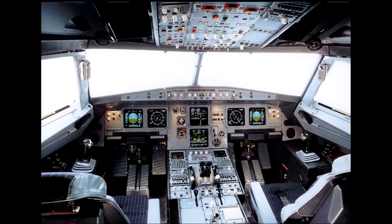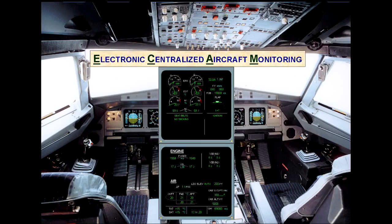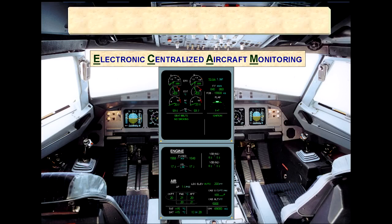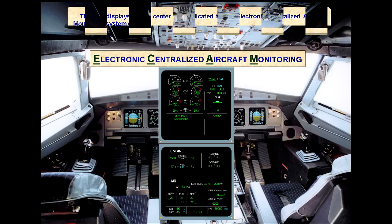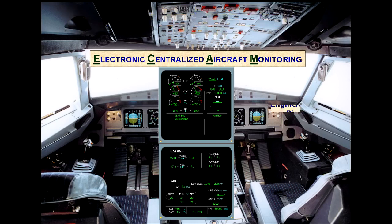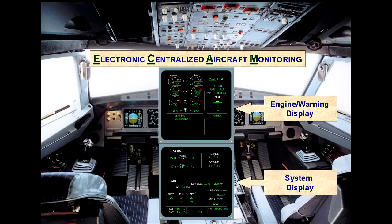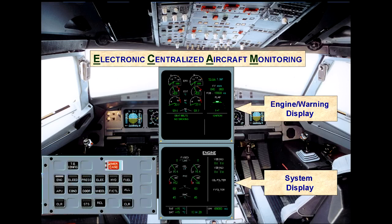The two displays in the center are dedicated to the electronic centralized aircraft monitoring system, ECAM. The upper ECAM display is known as the engine warning display, E/WD. The lower ECAM display is known as the system display, SD. It is on this screen that various aircraft system parameters can be viewed by the pilots. As an example, we will cycle through the system pages for you.